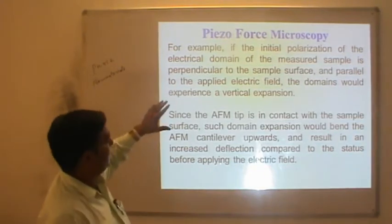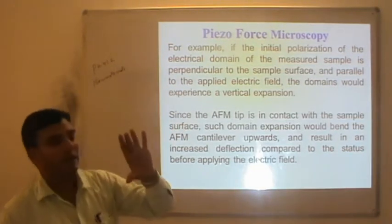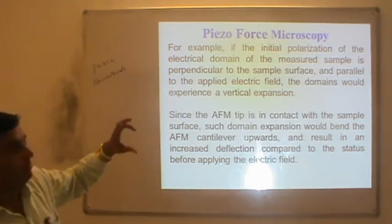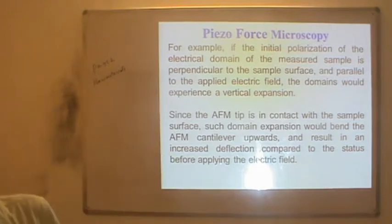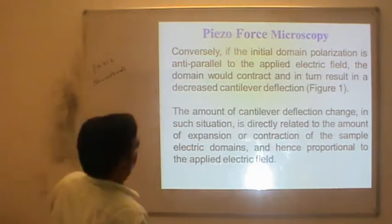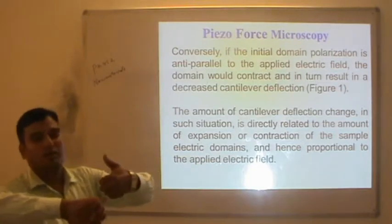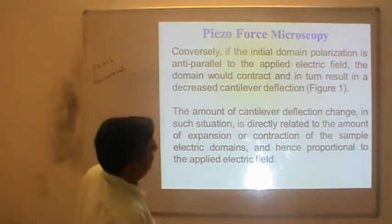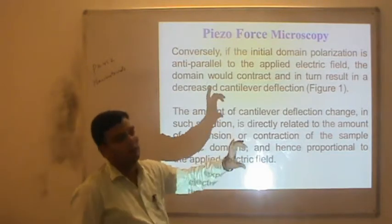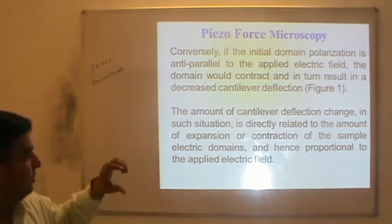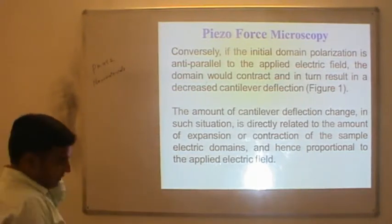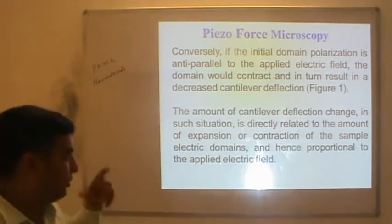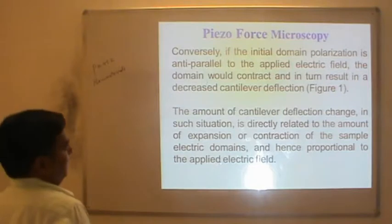If the polarization is in the direction of the electrical domain and the forces are parallel, there is an expansion — or conversely a contraction. If the ratio of polarization is anti-parallel to the applied electric field, the domain would contract, resulting in decreased cantilever deflection. In the parallel case, deflection increases; in the anti-parallel case, there is contraction in the cantilever.